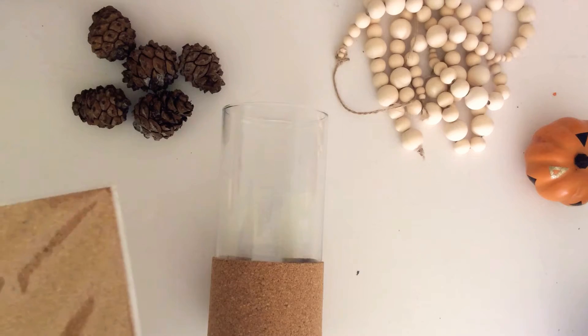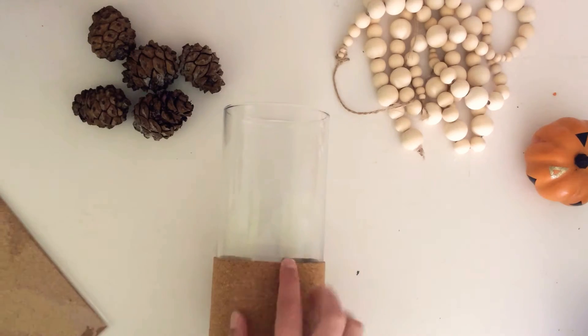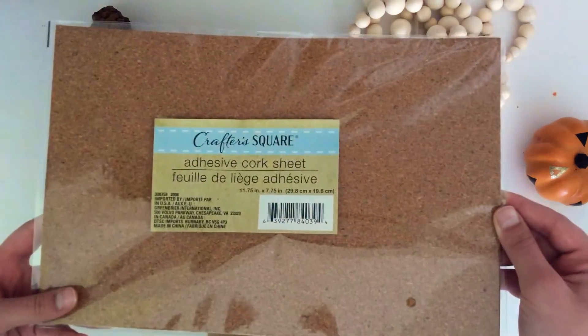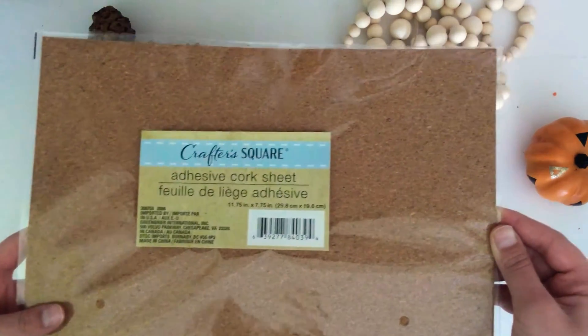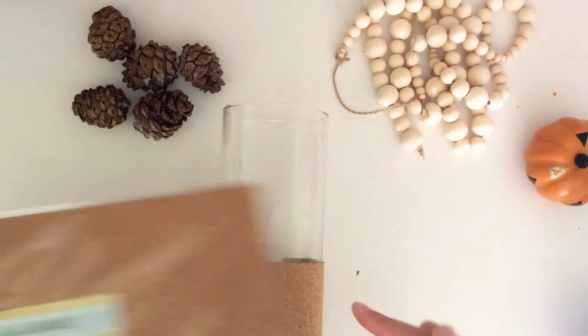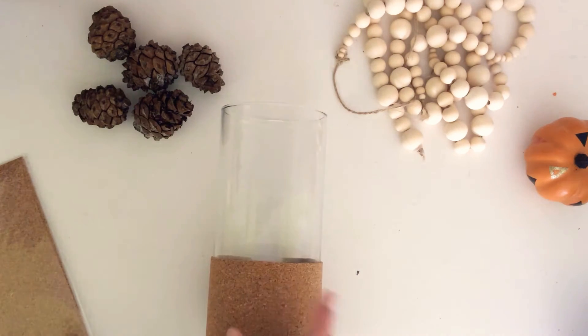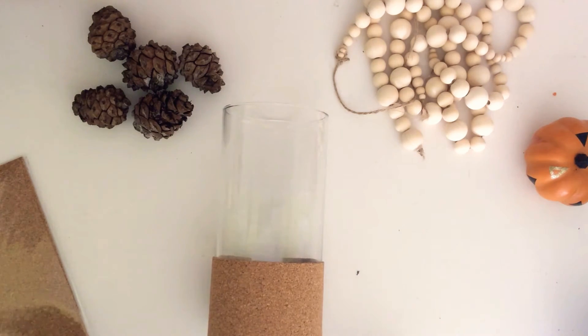So what you're going to do is, as you can see, I have this cylinder vase from Dollar Tree, and this is what the cork sheet looks like, just so you know what it looks like if you want to find it there. I just cut a little piece and stuck it on here because it's an adhesive cork sheet. You just peel off the back and there's a sticky side and stick it on there.